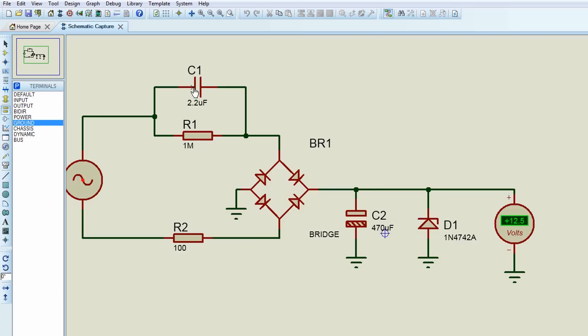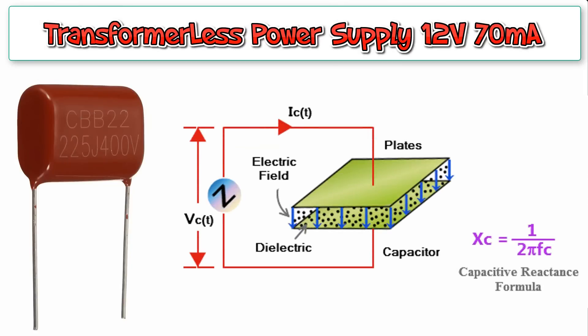X-rated capacitors are connected in series with phase line of AC to lower down the voltage. They are available in 230 volt, 400 volt AC or higher ratings.